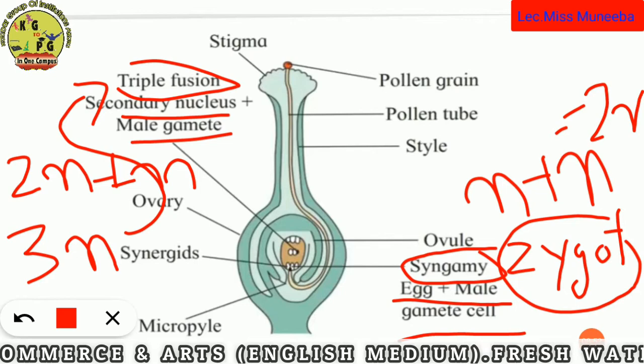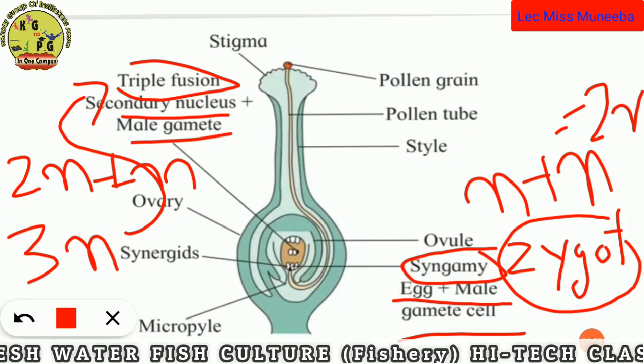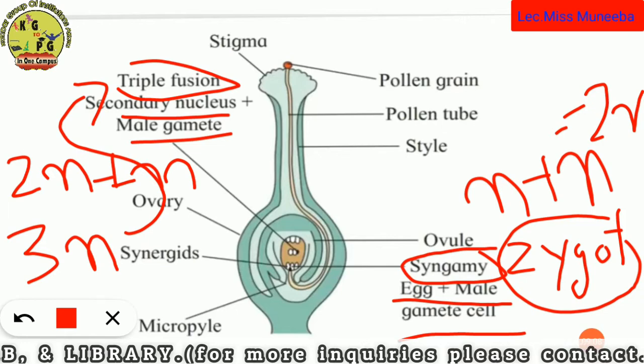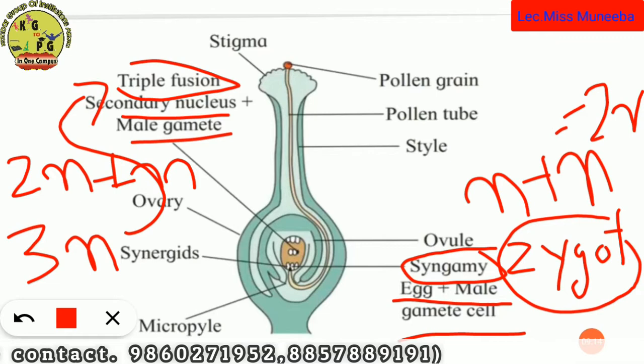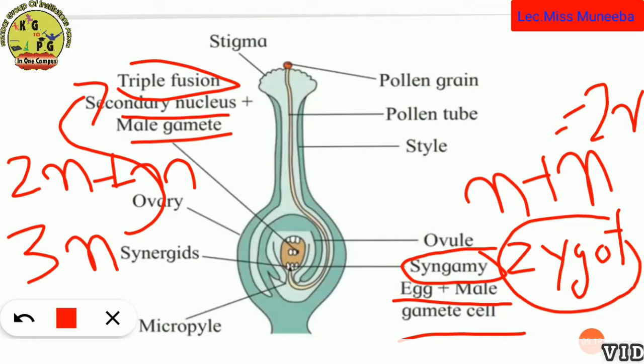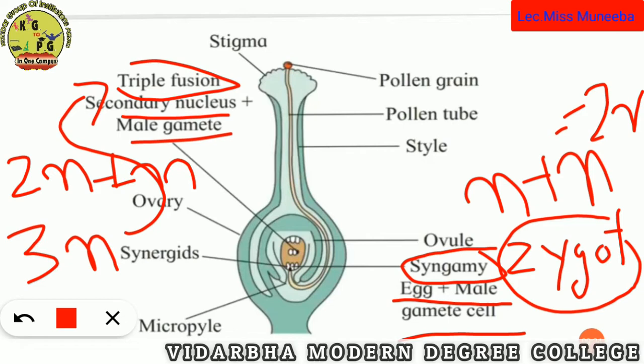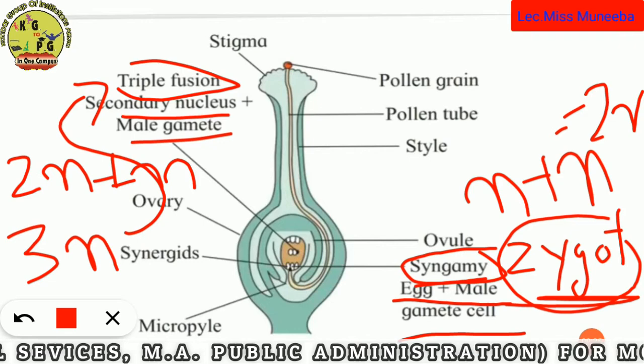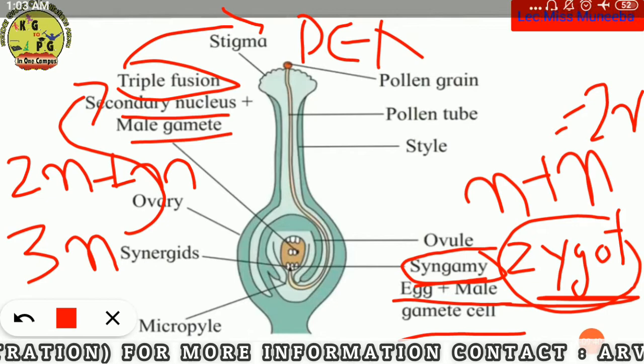The zygote that forms from Syngamy is generative type, meaning it gives rise to the seed and ultimately a new plant. The product of Triple Fusion is vegetative type, forming the endosperm, which is a nutritive tissue. The product of Triple Fusion is called the Primary Endosperm Nucleus, abbreviated as PEN.